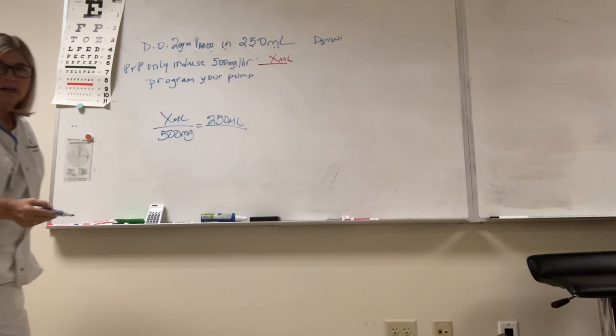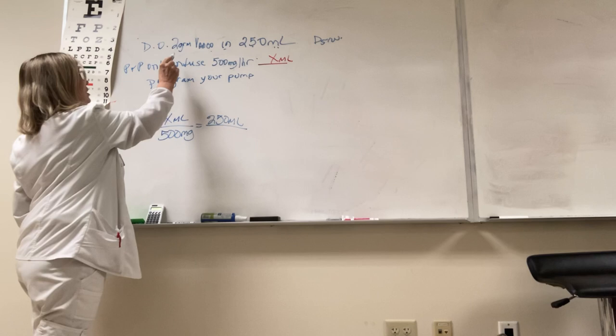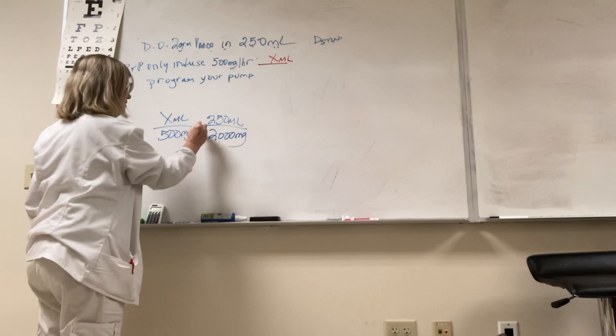I have grams here and milligrams here. What do I got to do? I've got to convert those grams to milligrams. You have to have all your labels have to match. So if there's 1,000 milligrams in one gram, two grams would be 2,000 milligrams.